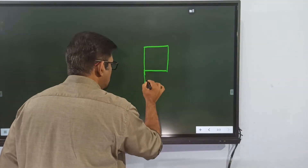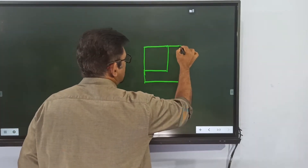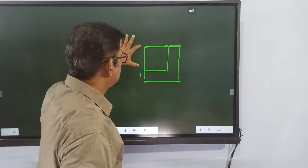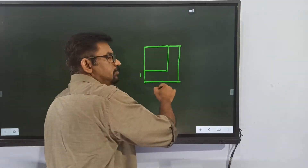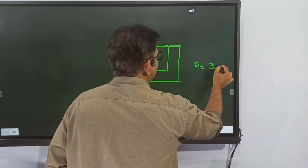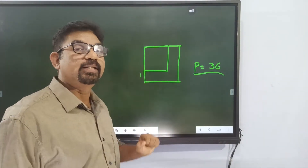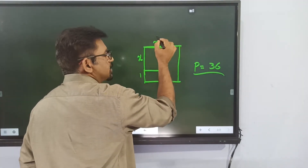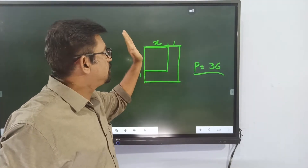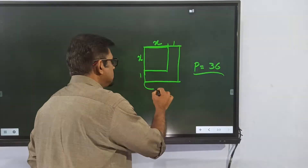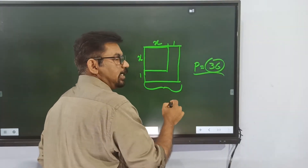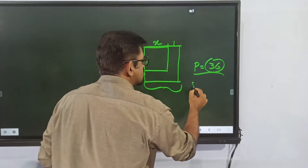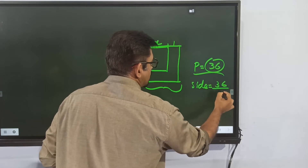When we increase the length of a square by 1 unit, the perimeter becomes 36. So each side of the increased square is 36 divided by 4, which equals 9 units.